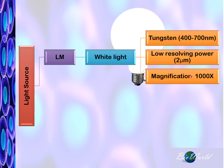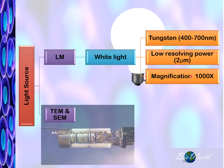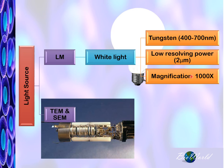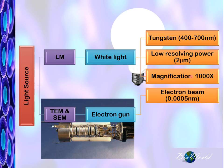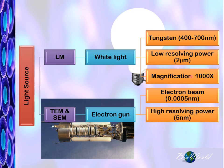If we compare this to electron microscopes, where the light source is actually the electron gun that emits electrons, with a wavelength of only 0.0005 nanometers, you can imagine that naturally the resolving power is going to be extremely high.